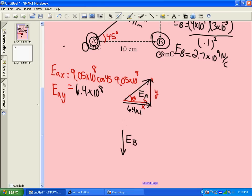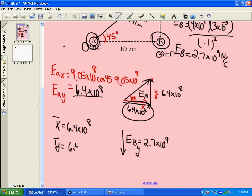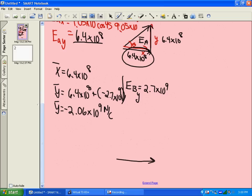The EB, remember, is still 2.7 times 10 to the 9. Now this direction is all in the y direction. There's no x component to this vector. So to add up the vectors, you need the total x, and there's only one x that we're dealing with, 6.4 times 10 to the 8. Our total y component of the electric field is the upward 6.4 times 10 to the 8, and a downward 2.7 times 10 to the 9. And you have to end up subtracting those two, and we get a negative 2.06 times 10 to the 9 newtons per coulomb. So my total x component is 6.4 times 10 to the 8. My total y component is down 2.06 times 10 to the 9.